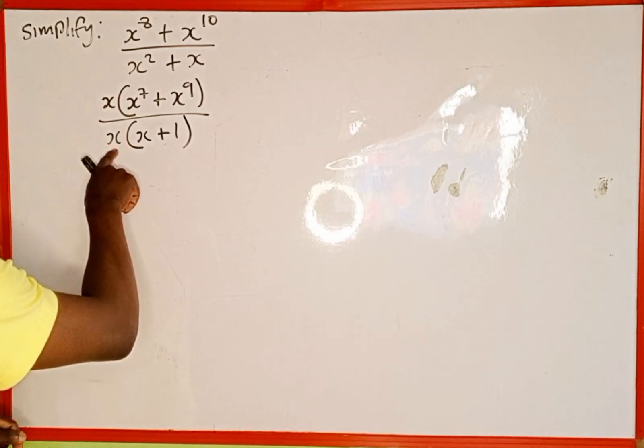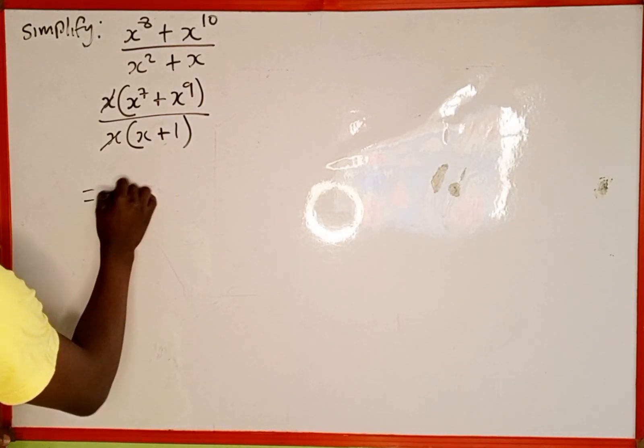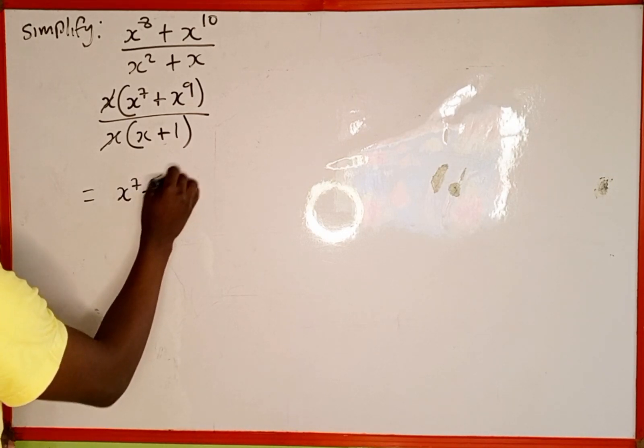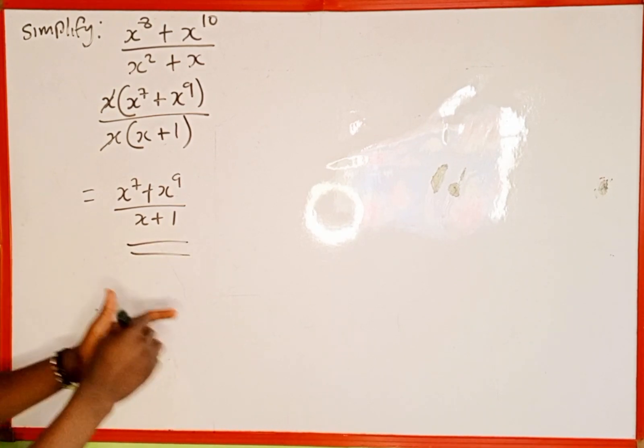And as we can see, this x is dividing this x, so this is going to cancel this. We are going to remain with what? x to power 7 plus x to power 9 all over x plus 1. This is just the simplification of this expression.